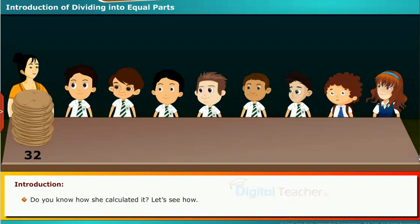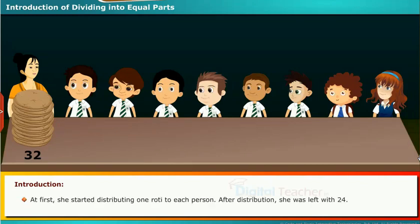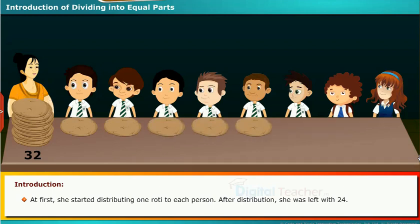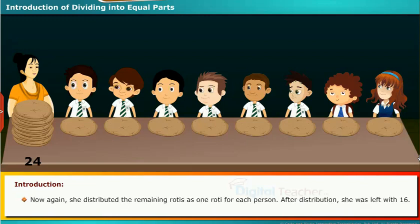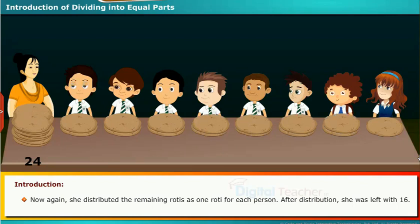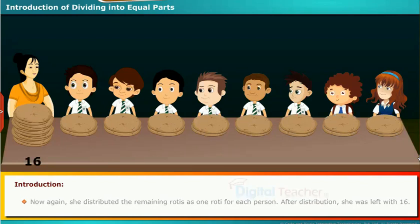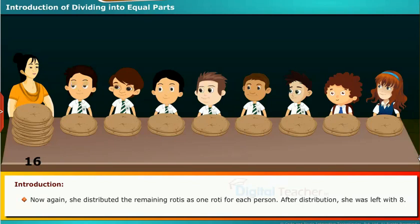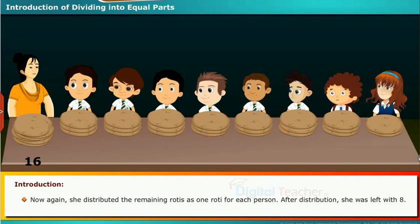Do you know how she calculated it? Let's see. At first, she started distributing one roti to each person. After distribution, she was left with 24. She distributed again one roti to each person and was left with 16. She distributed again and was left with 8.